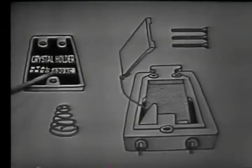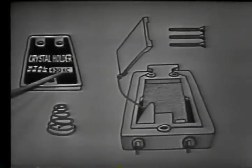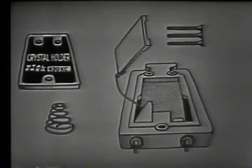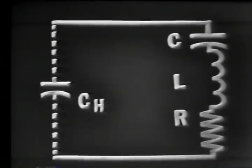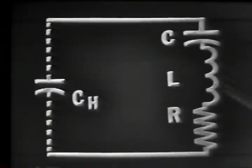Now let's see how the crystal reacts electrically. To do this we'll look at the electrical equivalent of a crystal and its holder. The crystal itself when vibrating acts very similar to a series resonant circuit containing resistance, inductance, and capacitance. When the crystal is placed in the holder, the capacitance of the holder will be placed in parallel — CH, the capacitance of the holder. This capacitance represents the holder capacitance; the series RLC represents the vibrating crystal.